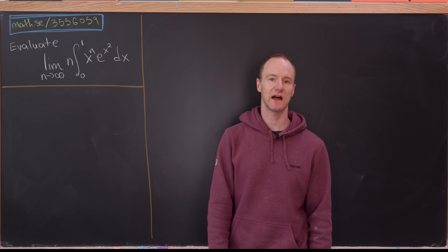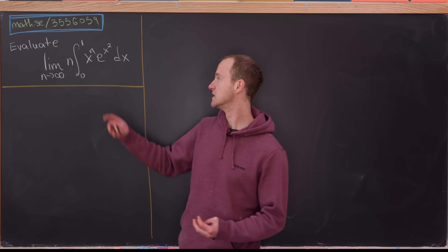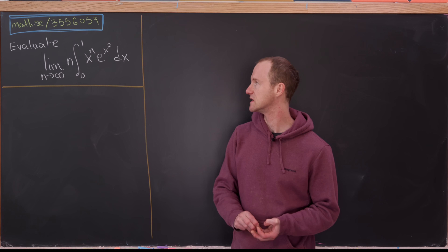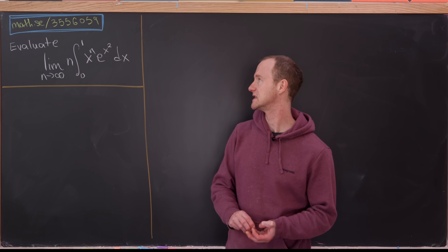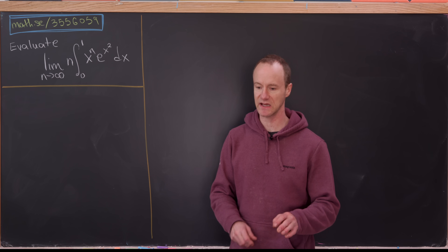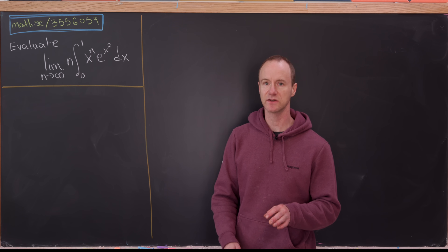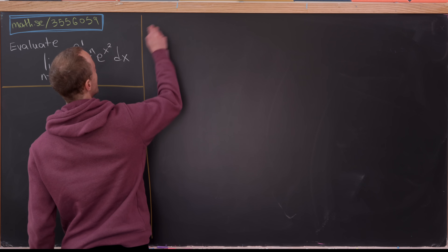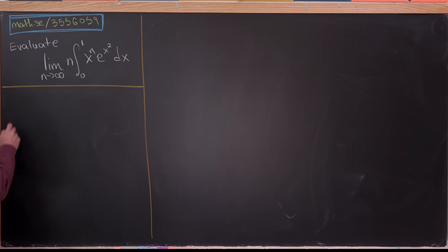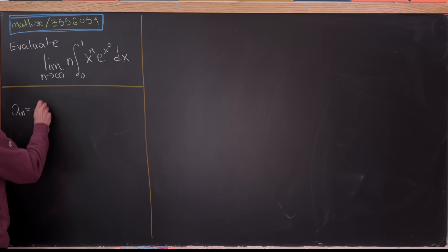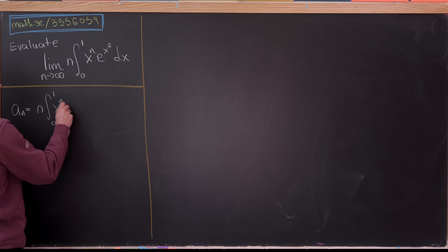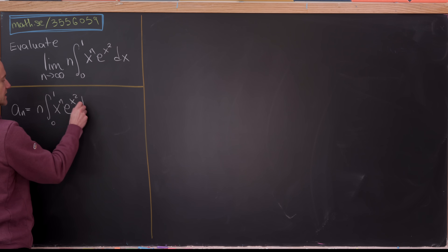Today we're going to look at a nice limit that I found on Stack Exchange. We have the limit as n goes to infinity of n times the integral from 0 to 1 of x to the n times e to the x squared dx. Let's set a sub n equal to n times the integral from 0 to 1 of x to the n times e to the x squared dx.